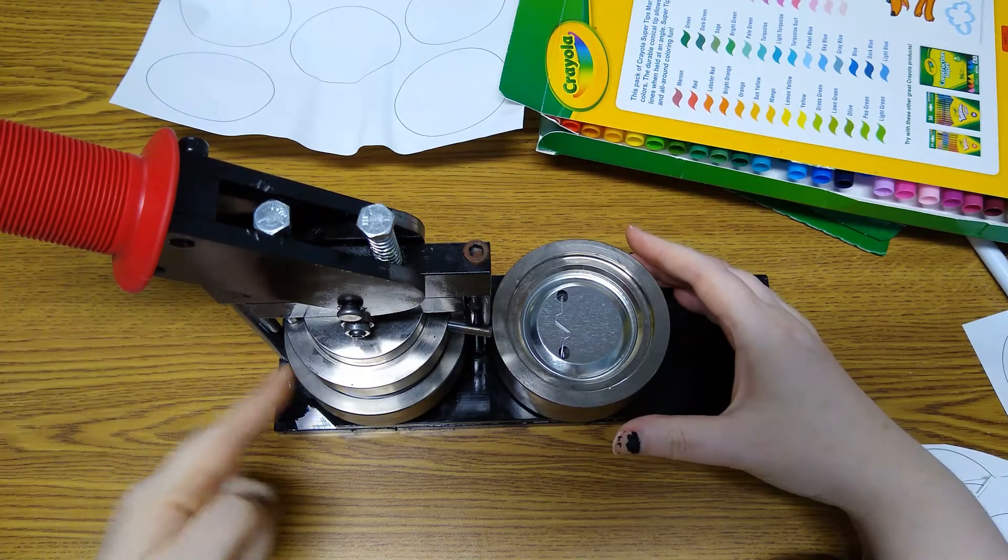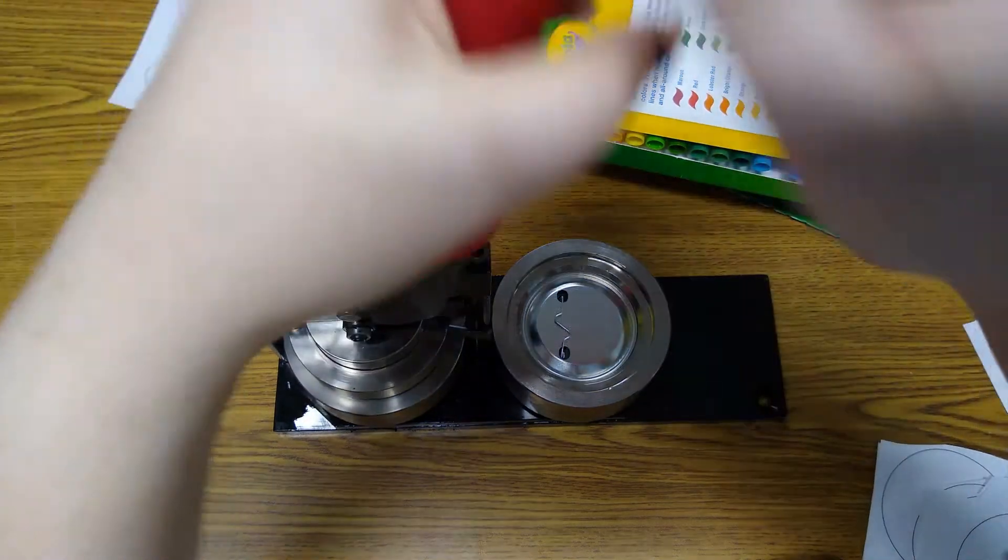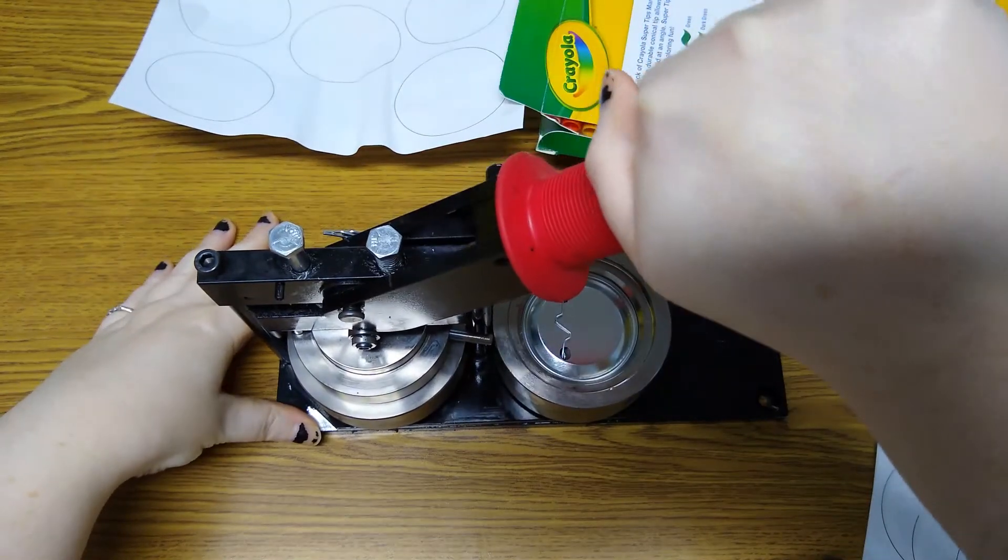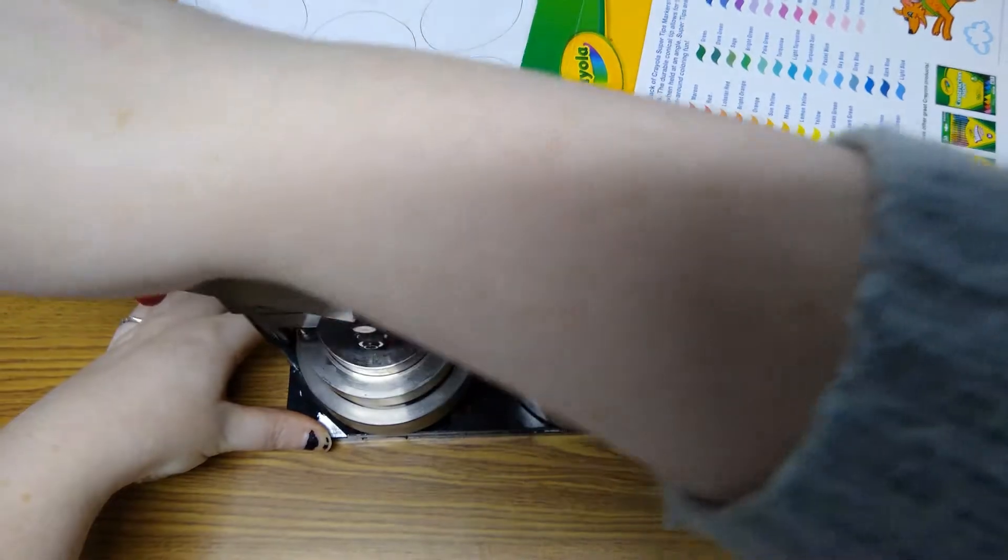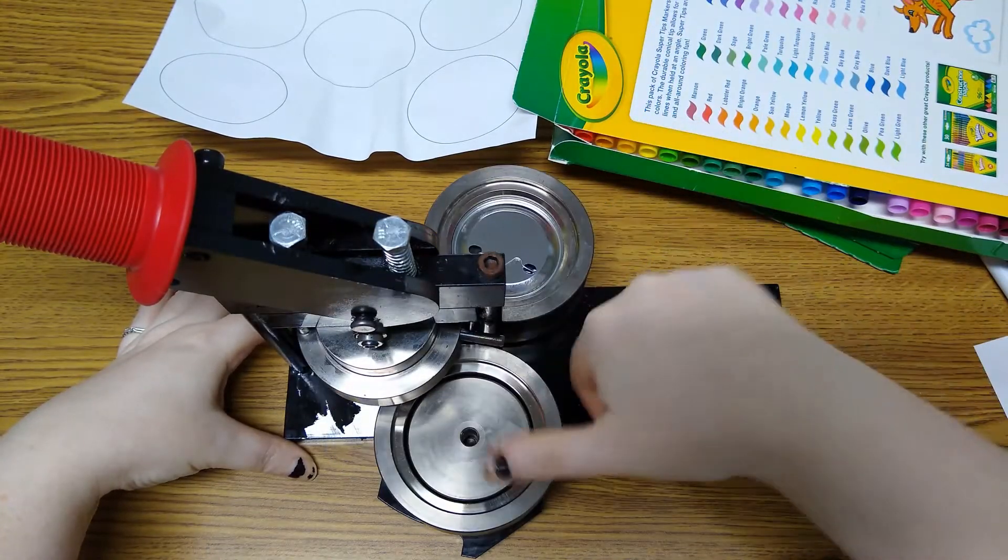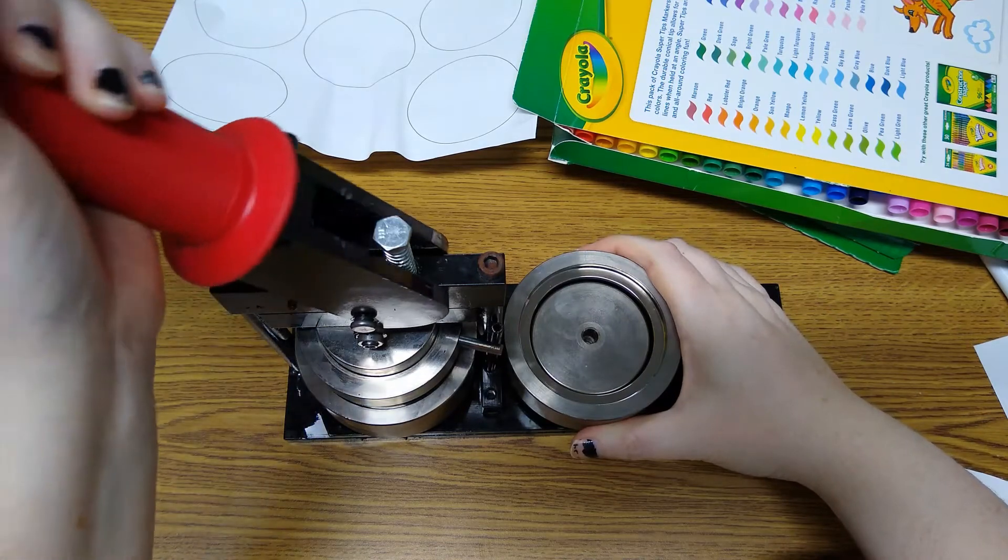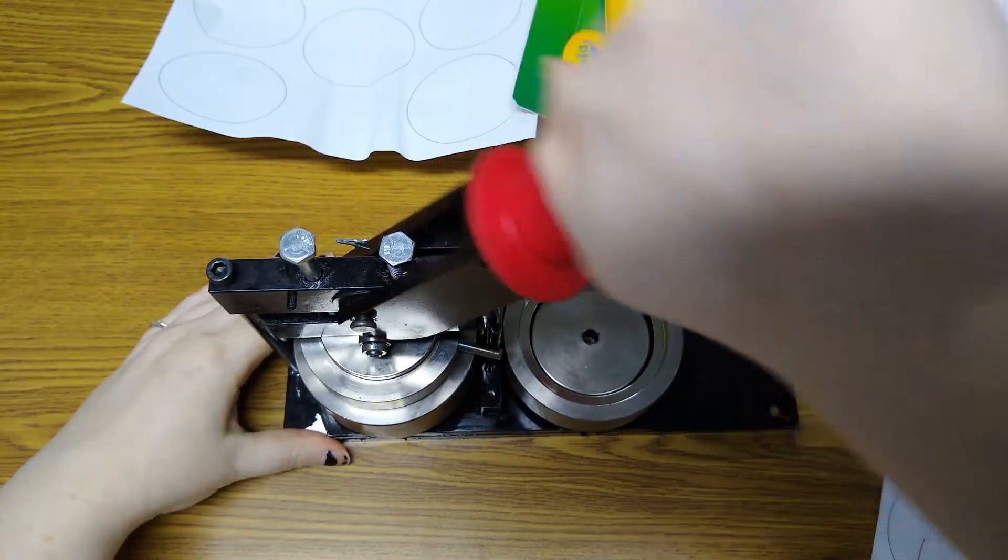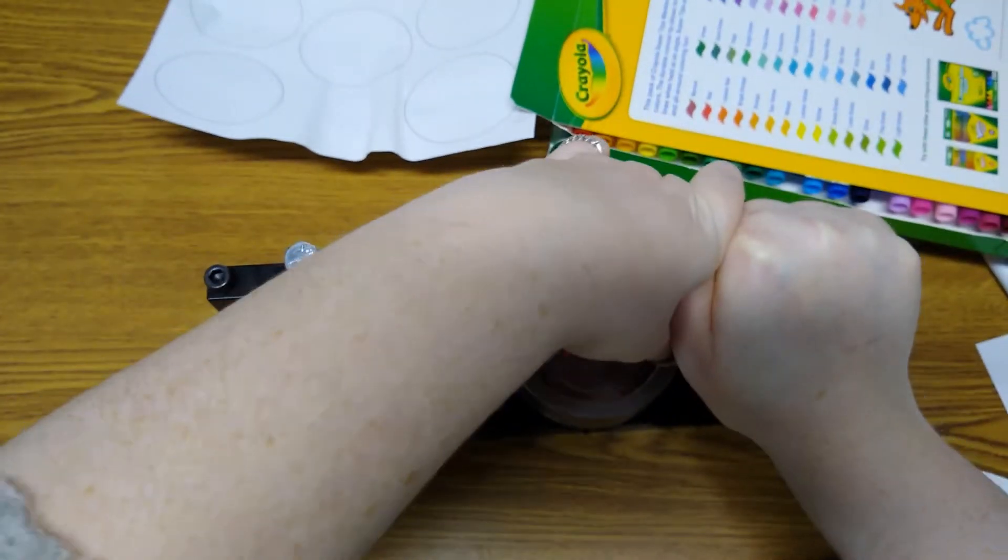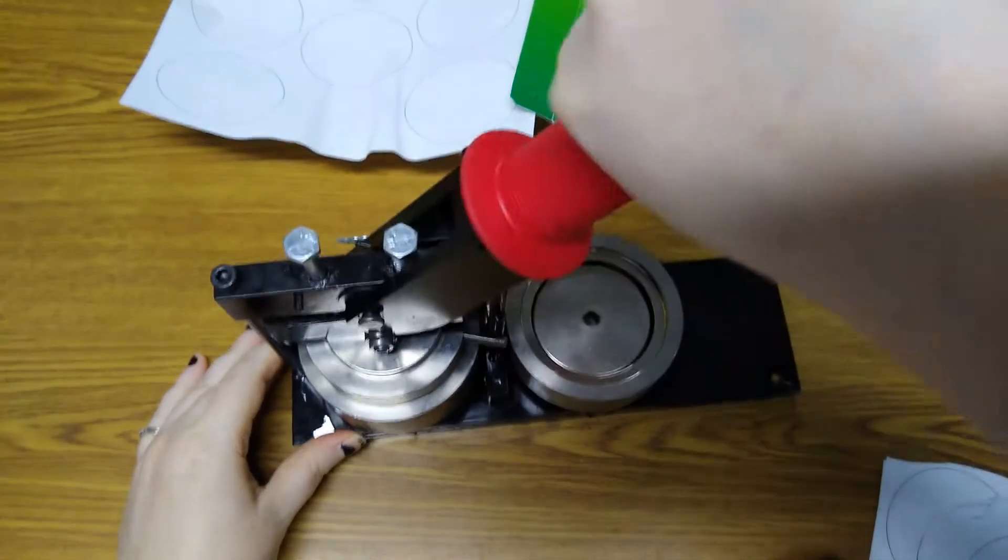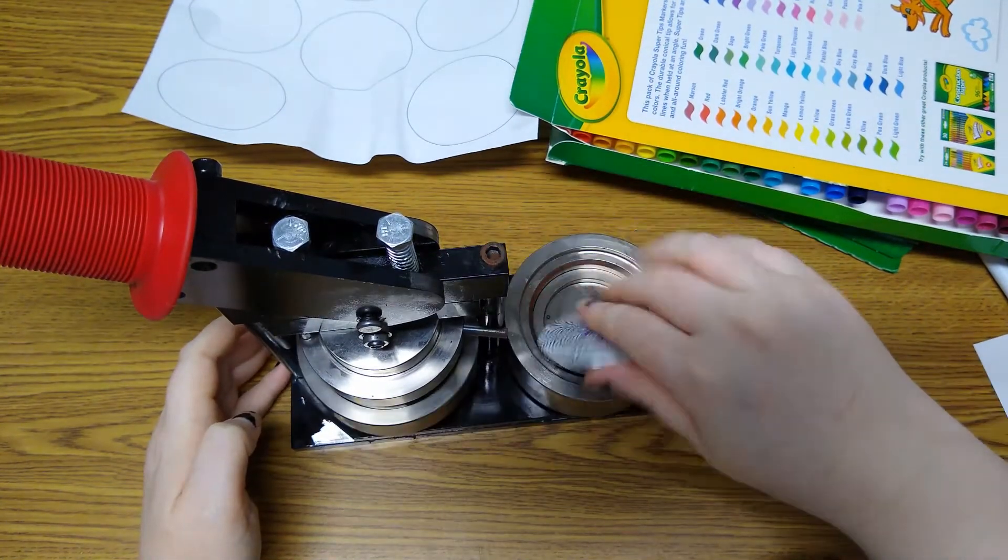Alright, so to stamp the front of the button, you're just going to take the lever and push down. And then pull it back up, spin it, and you'll see it's disappeared. It's almost like magic. And then you're going to push the lever down again. And lift. And you should have a button.